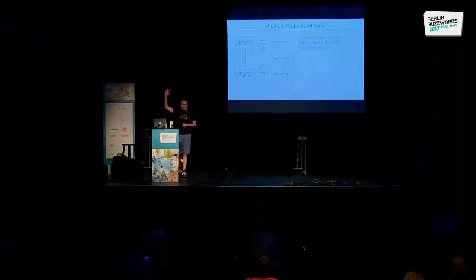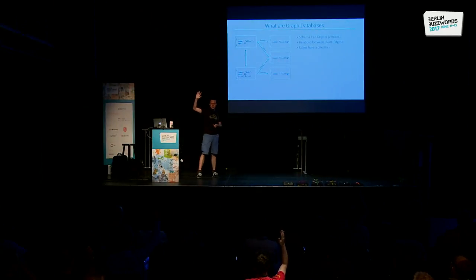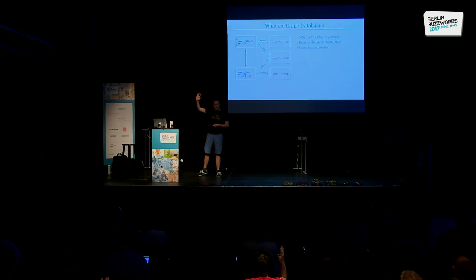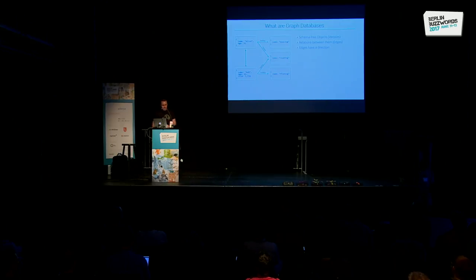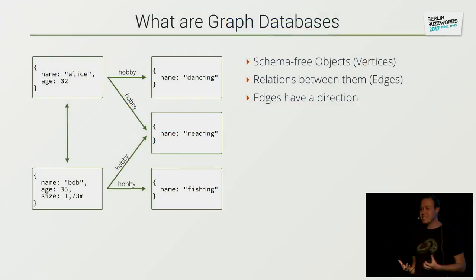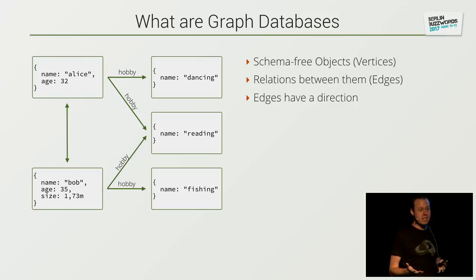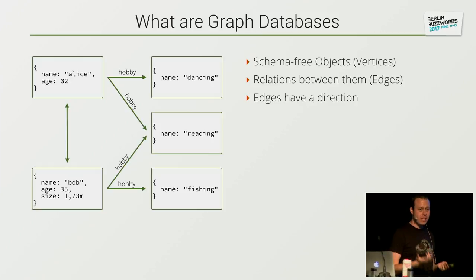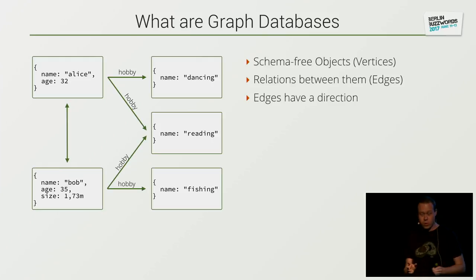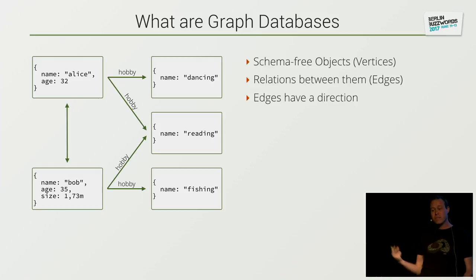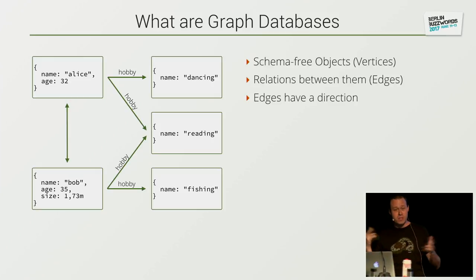So who of you is already familiar with graph databases? Almost all of you, so the start might be a bit boring. Who of you has heard of ArangoDB? So what are graph databases? For everyone who is not yet familiar with that, graph databases typically store schema-free objects — JSON documents, which they call vertices. You can compare them with relational tables. And they store relations between those vertices, which are called edges. Those are many-to-many relations in the relational world, and all these edges have a direction.